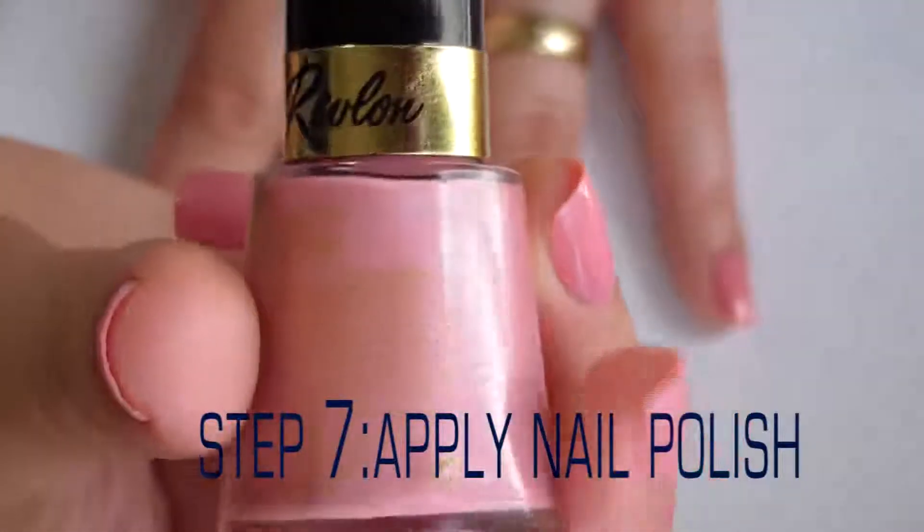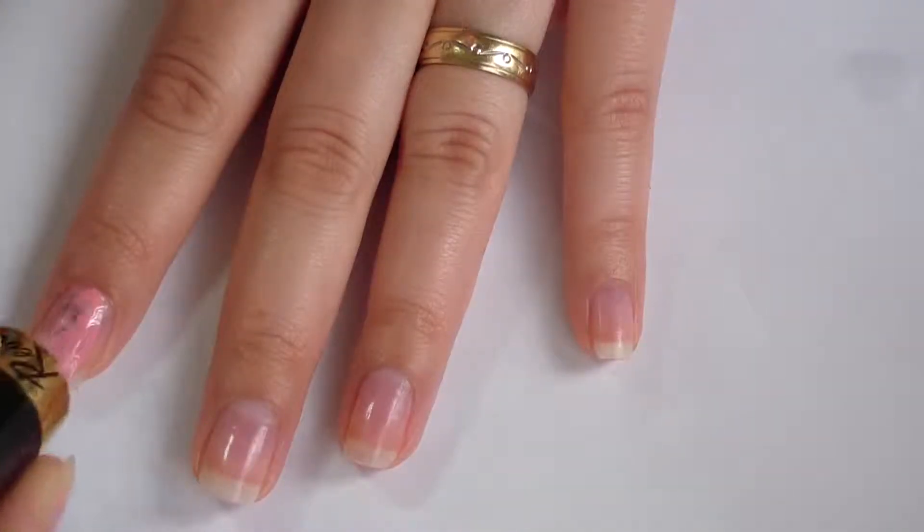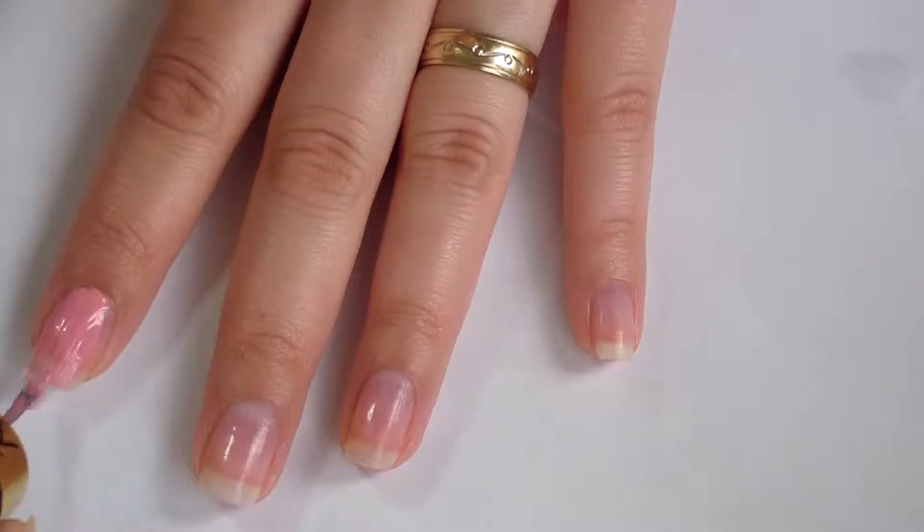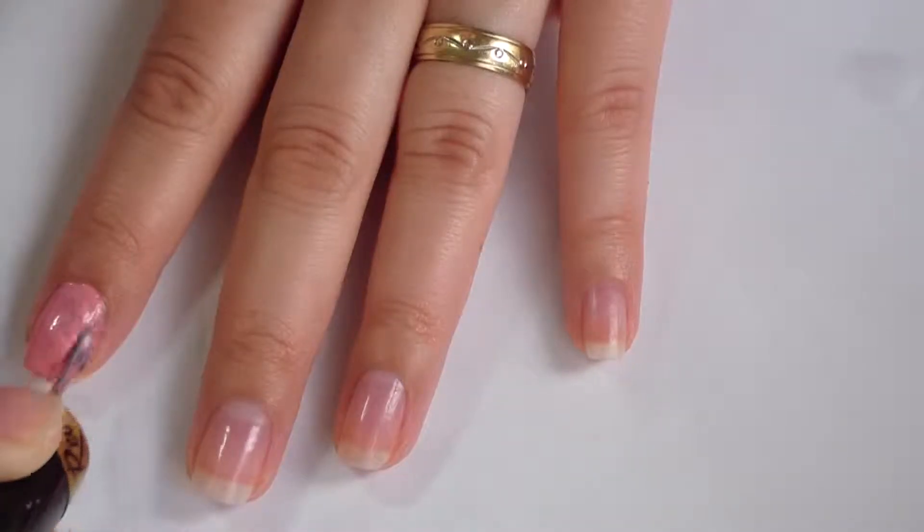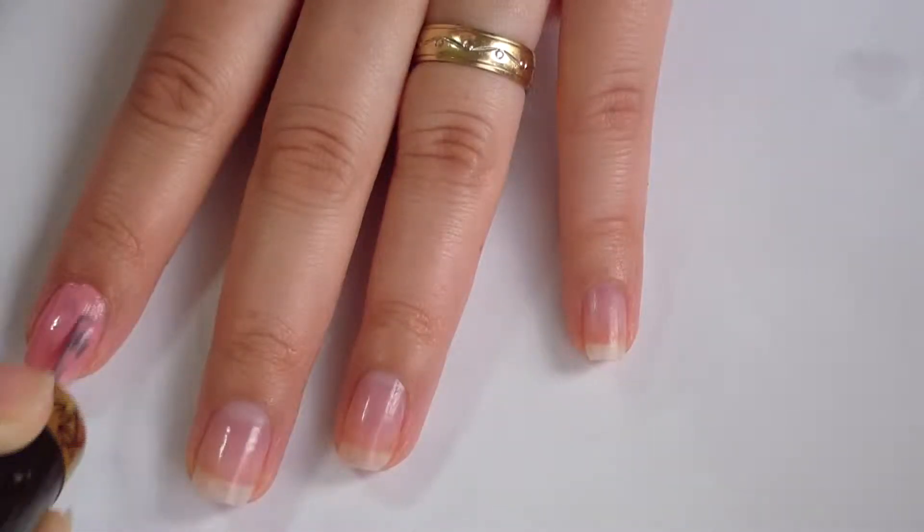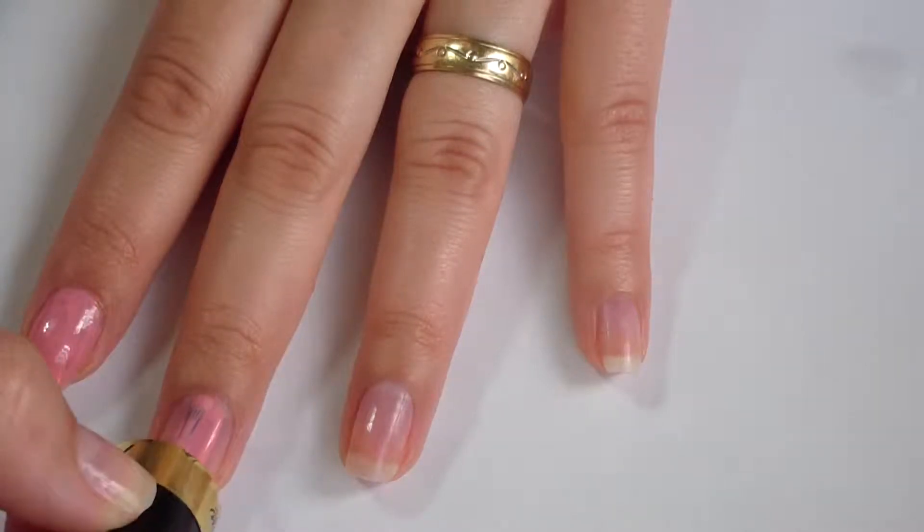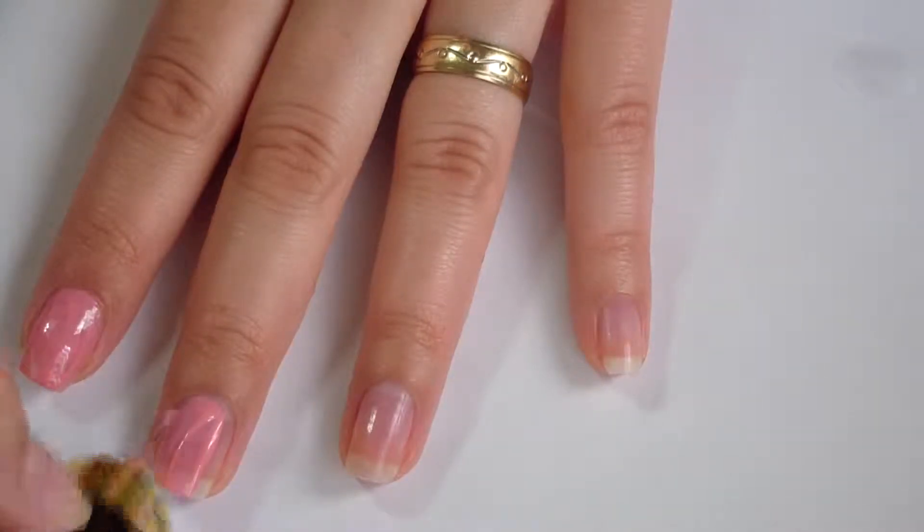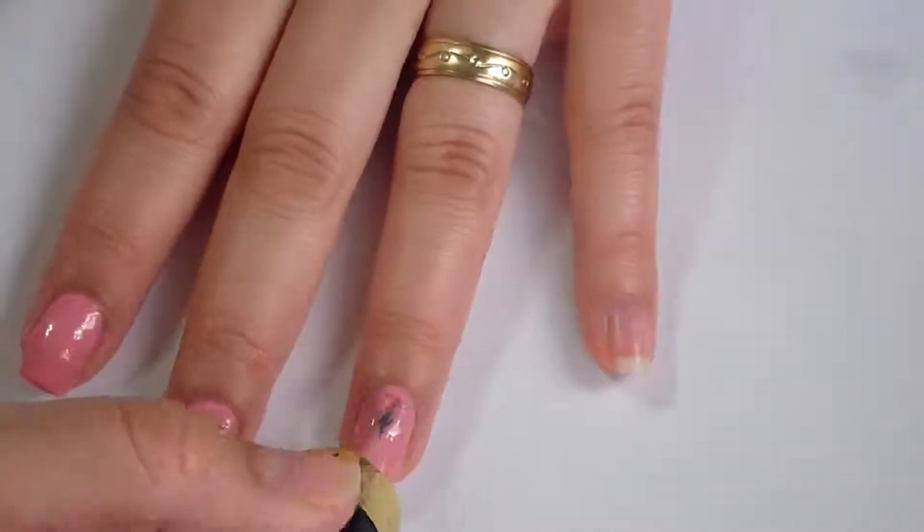Step number seven, apply a nail polish. I'm going to be using this Revlon color. It's called Temp Dress. I'm going to be applying two coats of this nail polish just to make the color stand out more.